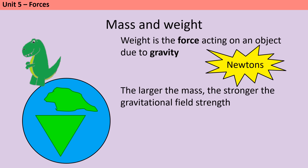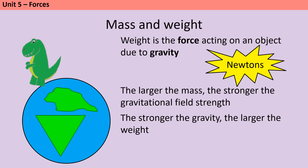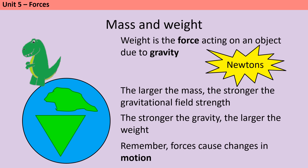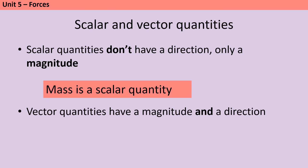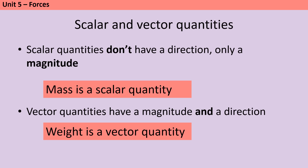Because earth is so much bigger than you, earth's gravity is about 10 to the 24 times bigger than yours. The stronger the gravity is, the larger the weight of an object will be. Astronauts jumping on the moon can jump higher and further because the gravitational field strength of the moon is smaller than on earth. Mass must be a scalar quantity whereas weight is a vector quantity because your weight does have a direction — it's pulling you down towards the earth.